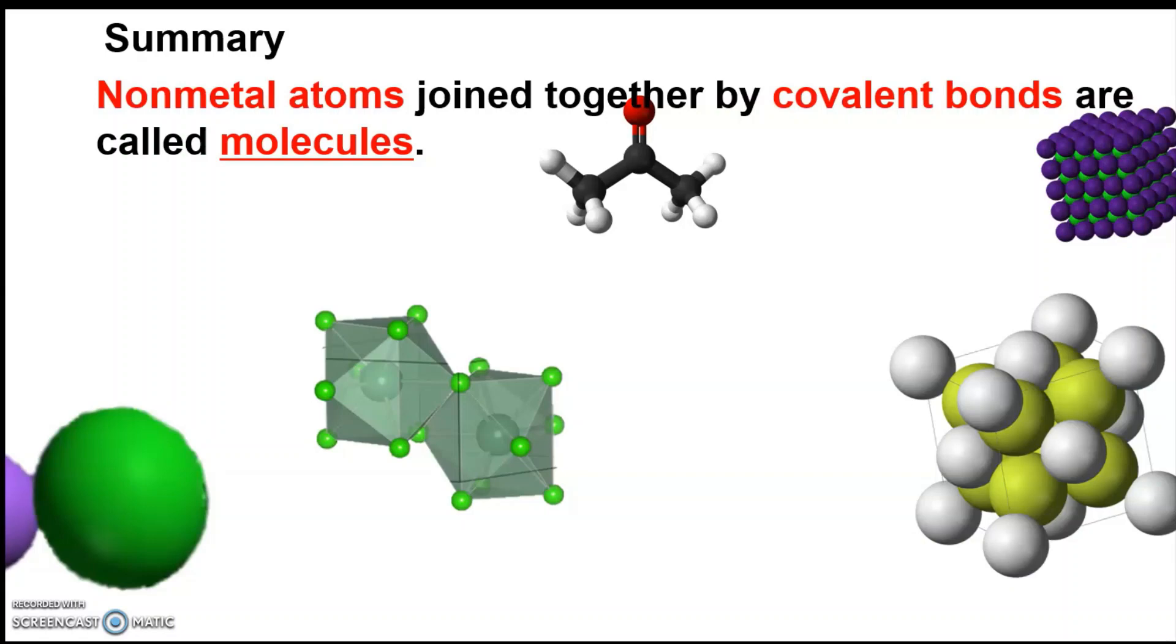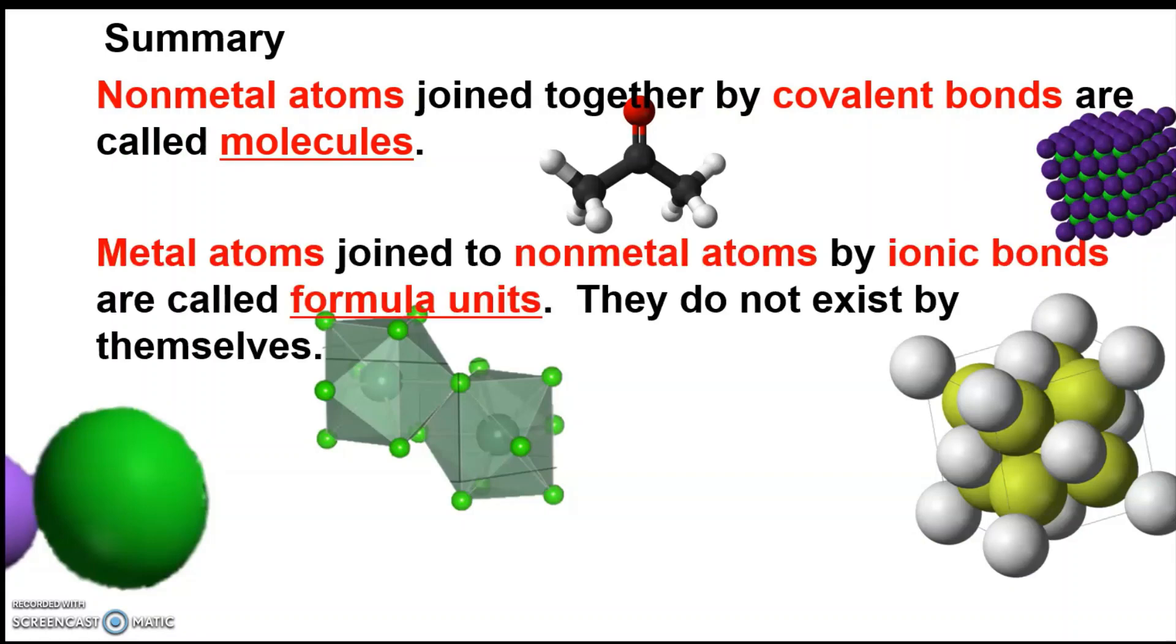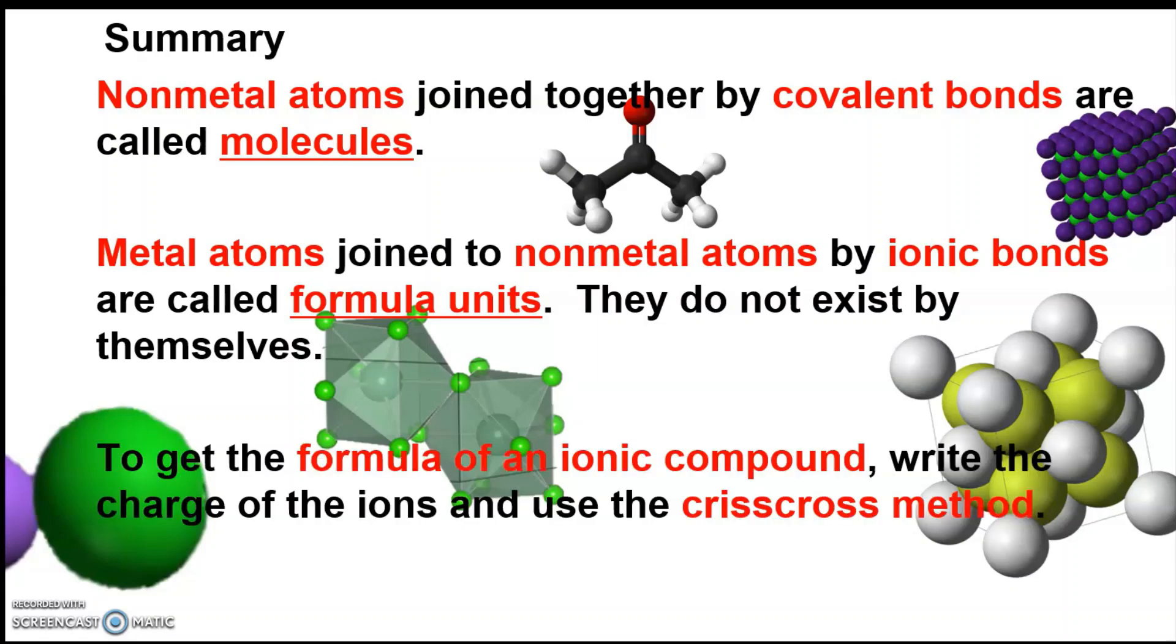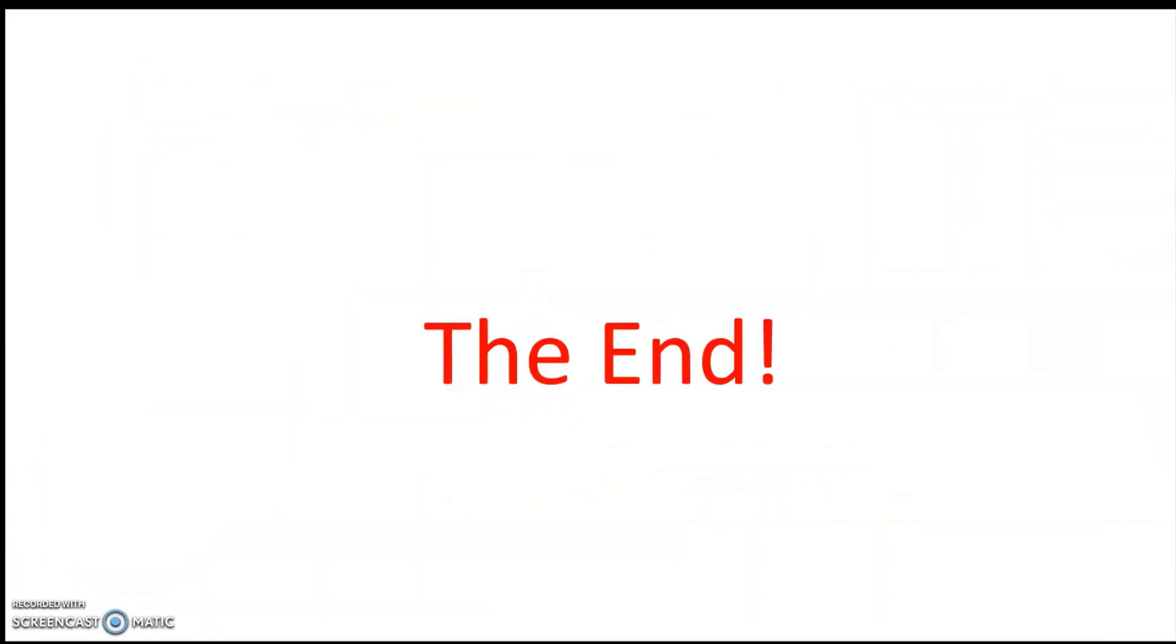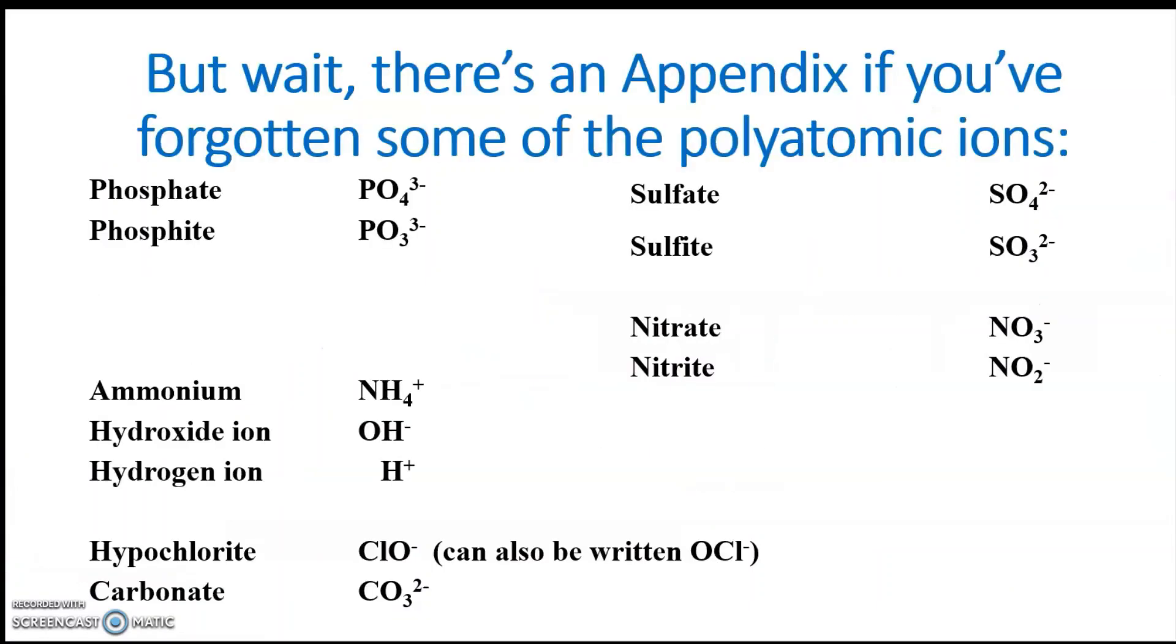Anyway, we're summarizing now. Non-metal atoms joined together by covalent bonds are called molecules. Metal atoms joined to non-metal atoms by ionic bonds are called formula units. They do not exist by themselves. To get the formula of an ionic compound, write the charge of the ions and use the crisscross method as we showed extensively. And then lastly, I couldn't help, crystal healing is a huge, enormous load of crap. And that is the end. But since I promised an appendix, that's not the end. You just might want to hit pause because I'm out of here.